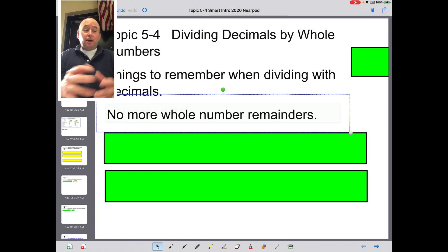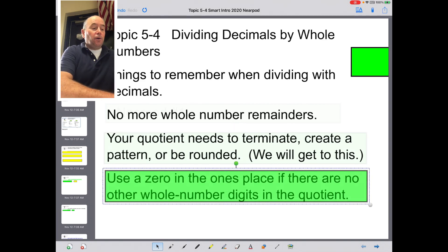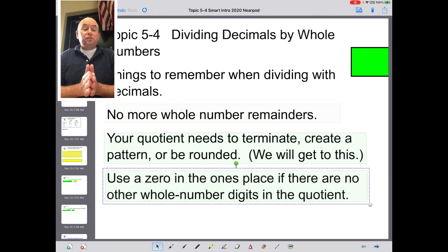The other thing that we want to remember when we're working with decimals and division is this. Your quotient needs to terminate or it needs to create a pattern or be rounded. And we're going to get to this. The third thing to remember is that we will use zero in the ones place if there are no other whole number digits in the quotient.